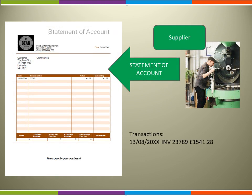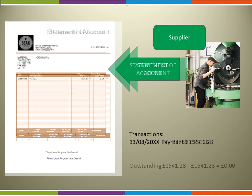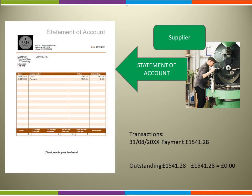Here we can see the first transaction. On the 13th of August, invoice number 23789 had a value of £1,541.28. At that point, there was still an outstanding balance of £1,541.28. There was then a second transaction. On the 31st of August, there was a payment made of £1,541.28. Note, because this is the payment, it is shown as a negative — it has a minus sign in front of it. So now the amount outstanding is zero. There was an outstanding balance of £1,541.28 and the same amount has now been paid.